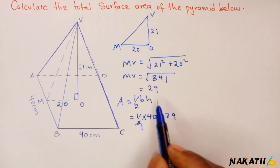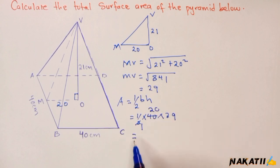If you simplify this by two, this one here is 20. 20 times 29, you get 580. This is the area of one triangular face.